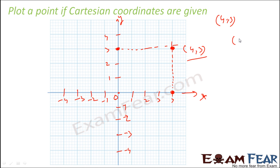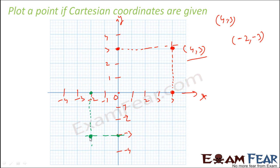Let us now plot minus 2 comma minus 3. Along the x-axis, minus 2 is this point. Along the y-axis, minus 3 is this point. If you draw the perpendicular lines from each, they meet at this point — which is minus 2 comma minus 3.